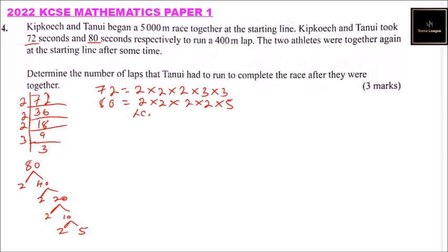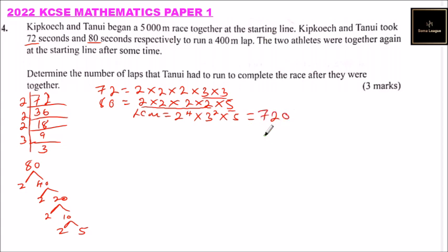So the LCM — we get the factor with the highest index. So here we will take 2 to the power 4, multiply by 3 to the power 2, multiply by 5. You can compute that and you will be able to get 720 using your calculator.